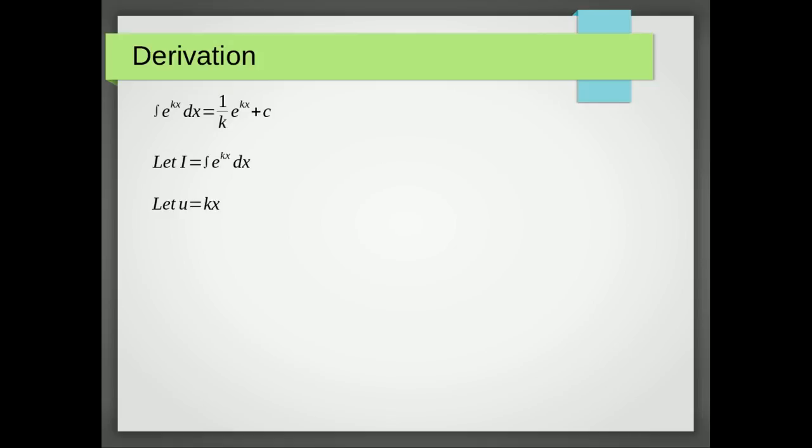So we'll start off by saying let u equal kx. Now if we differentiate that with respect to x we get du dx equals k. Now we're going to use this and we're effectively going to say dx is the same as du over k and then we're also going to replace this kx here with this u here. So this is going to be replaced with du over k because we're just going to cross multiply here and this is going to be replaced with u.